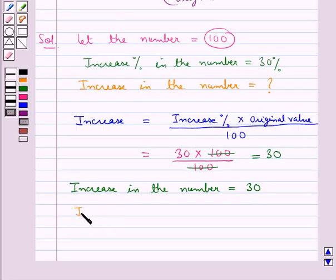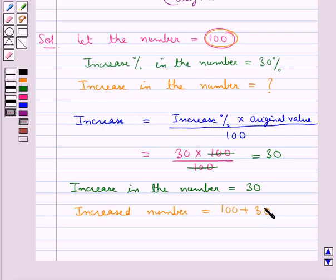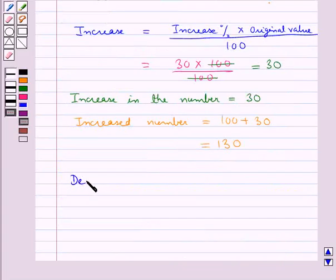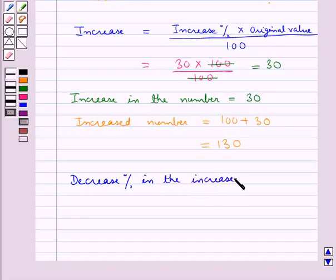So now the increased number is equal to the original value, which is 100, plus the increase in the number, that is 30, equal to 130. As given in the question, the increased number is decreased by 30%. So next, the decreased percent in the increased number is equal to 30%.